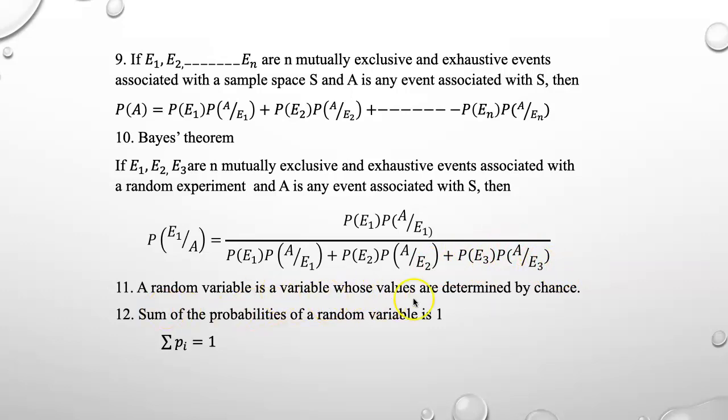A random variable is a variable whose values are determined by chance. Sum of the probabilities of a random variable is 1. So if you add all the probabilities for a random variable you get 1.